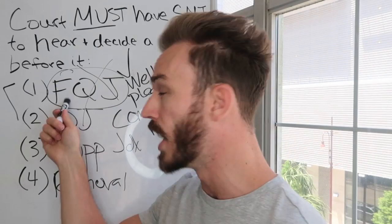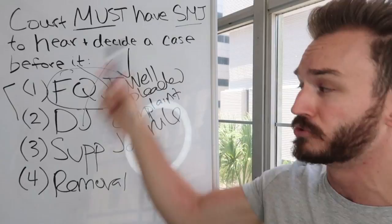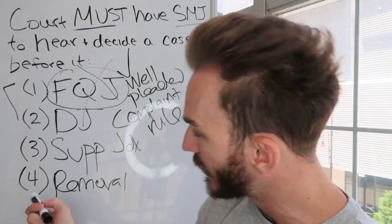Now, if the court doesn't have federal question jurisdiction, that doesn't mean the court doesn't have subject matter jurisdiction. Remember, you still have diversity jurisdiction. That's going to be the next thing you look at in your analysis, and it will be the topic of our next video when we discuss diversity jurisdiction. Until then, I'll see you at our next video.